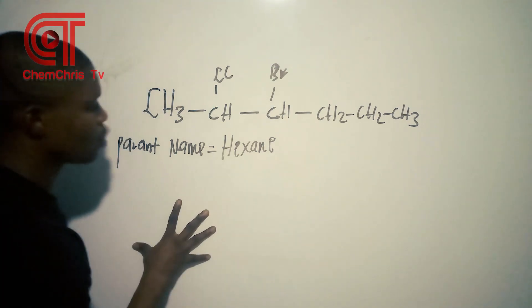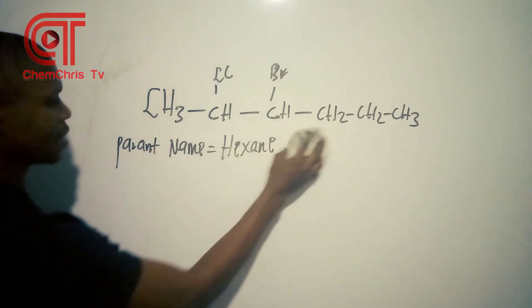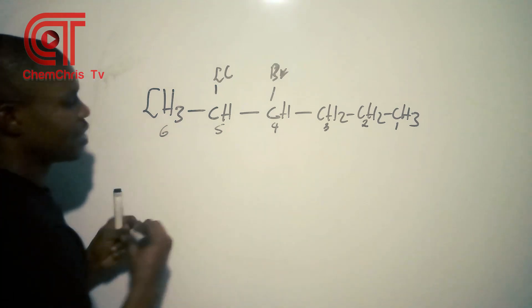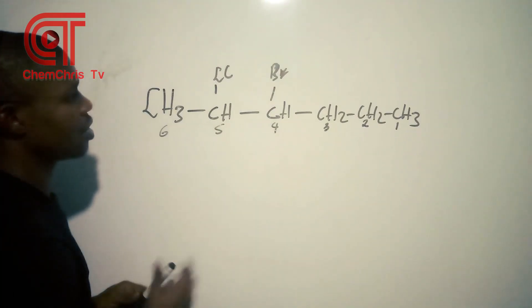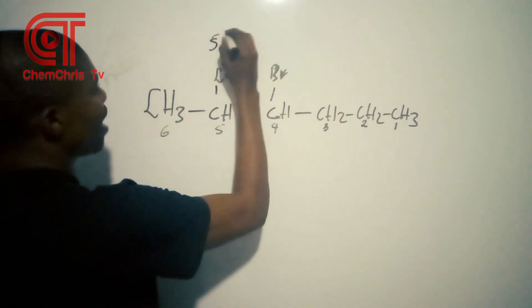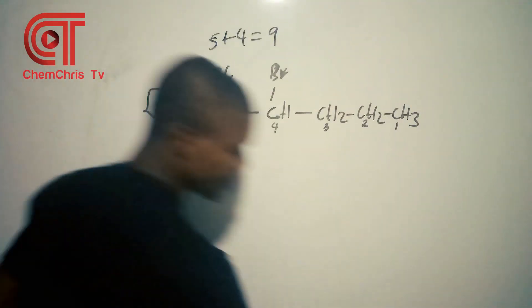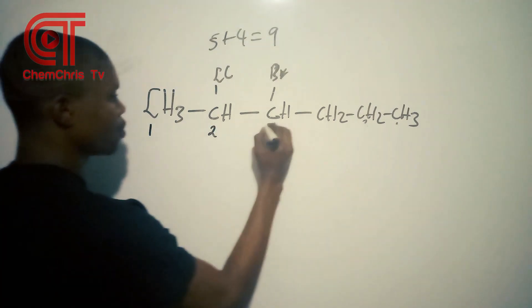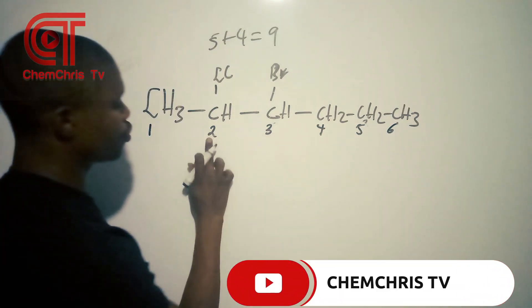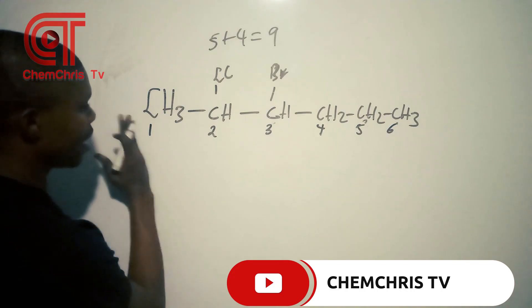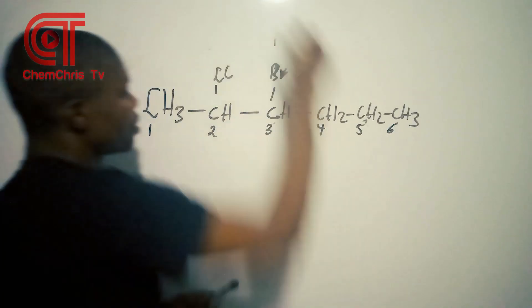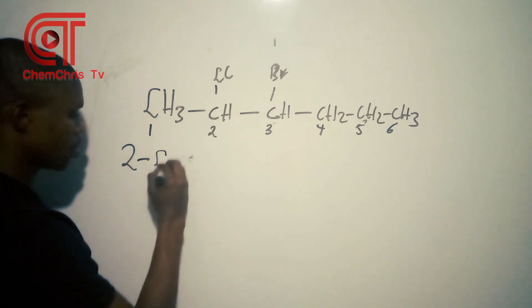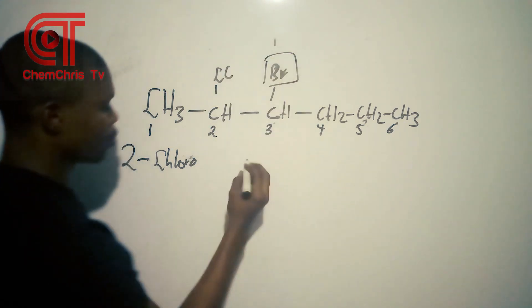There are two possible ways to number. Starting from one end: the substituents are on carbons 4 and 5. Four plus five equals nine. Starting from the other end: the substituents are on carbons 2 and 3. Two plus three equals five. Starting from the direction that gives the lowest sum, the substituents are at positions 2 and 3.